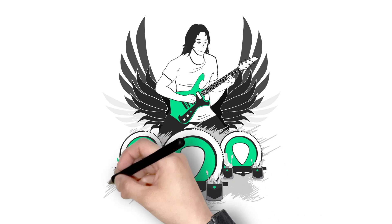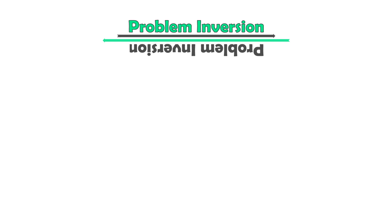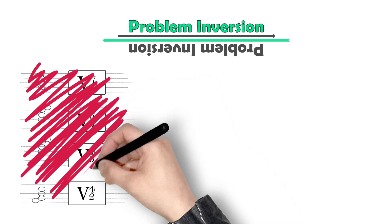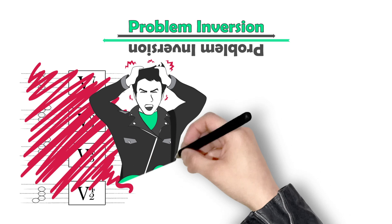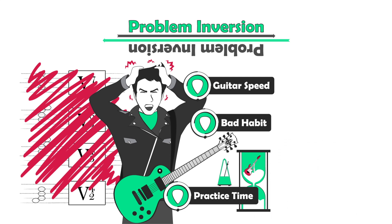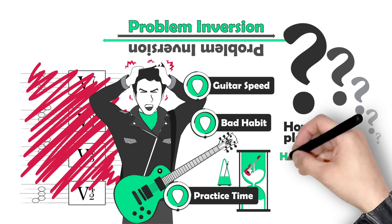The first is the idea of problem inversion. You may have heard of chord inversion in music theory — that's where you put the third, fifth, or seventh of the chord in the bass instead of the root — but that's not what this is. I'm talking about inverting your guitar playing problems. Think of some problem you have right now: you might be frustrated with your guitar speed, struggle with fixing a bad habit, or wish you had more time to practice. You may ask yourself questions like, how do I play faster? How do I remove this bad habit? Or how can I get more time to practice?